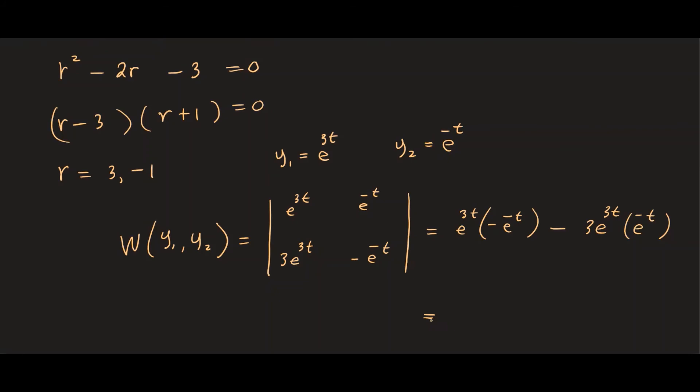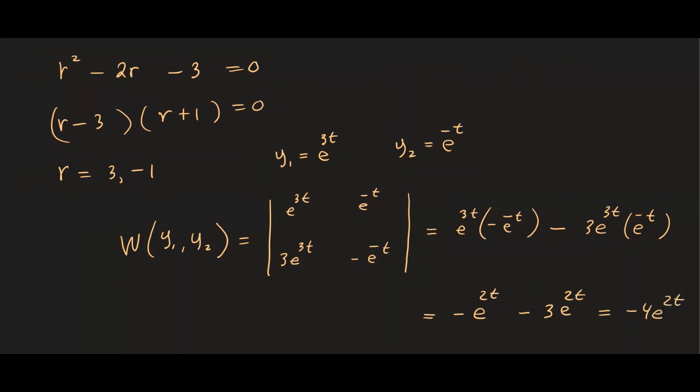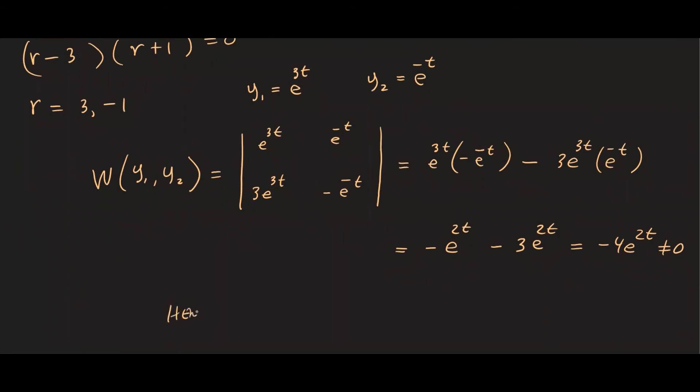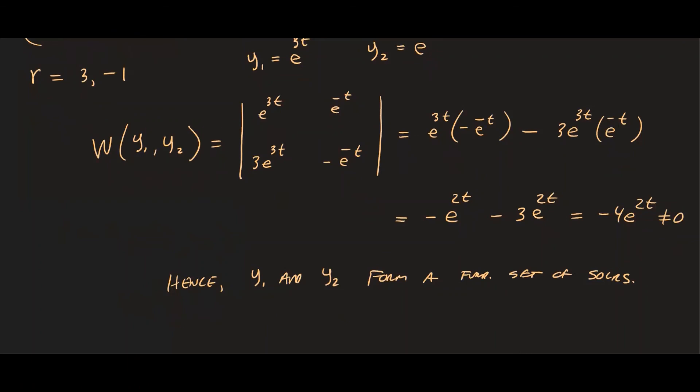I have -e^(2t), and then here we have -3e^(2t), and this is equal to -4e^(2t). And you see how this is not zero. So that's great. So we can say that, hence, y1 and y2 form a fundamental set of solutions. And we can also say they're linearly independent, and we can also claim that the general solution y is c1*e^(3t) + c2*e^(-t). That would be our general solution. So hopefully this makes sense.